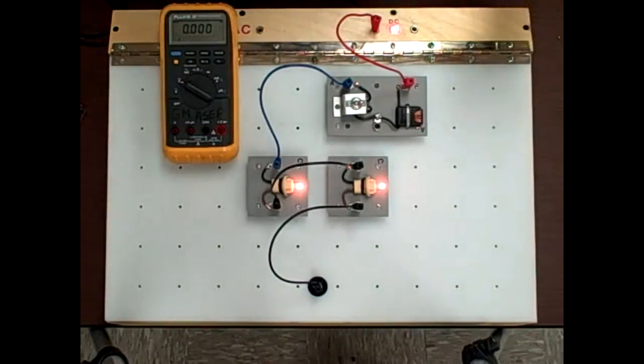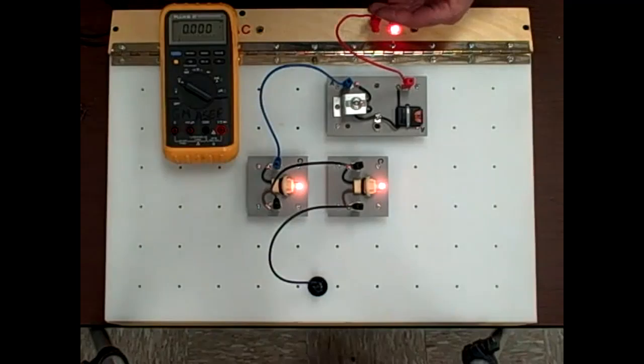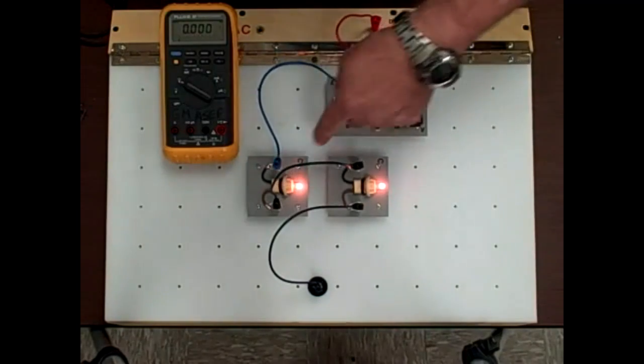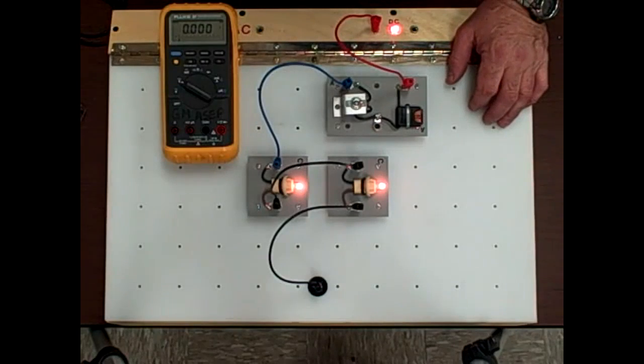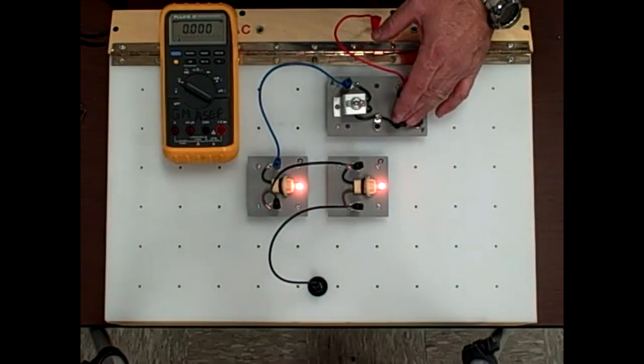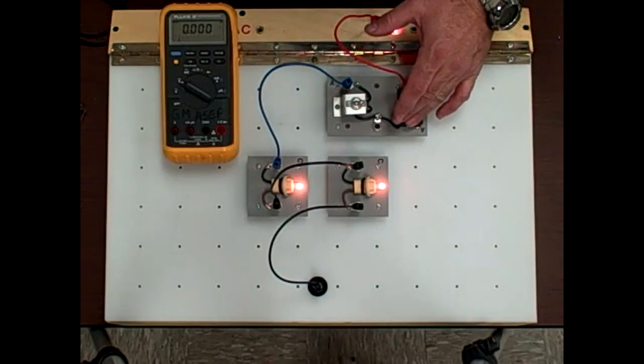Kirchhoff's law says that all the voltage drops will add back up to the source and it's going to be proportional. Basically the only two loads we got on the circuit are two marker lights. We do have a switch and a fuse holder which would probably drop a little bit of voltage but I think it's going to be insignificant in this case.